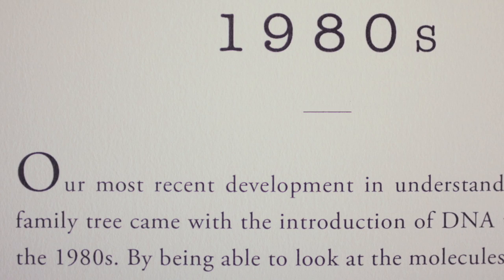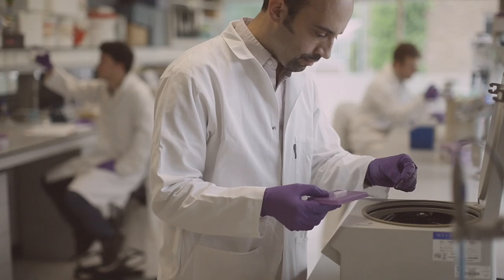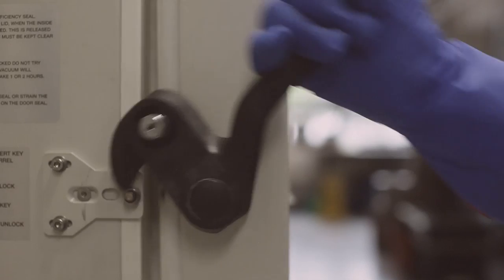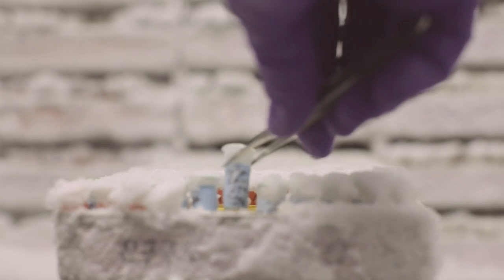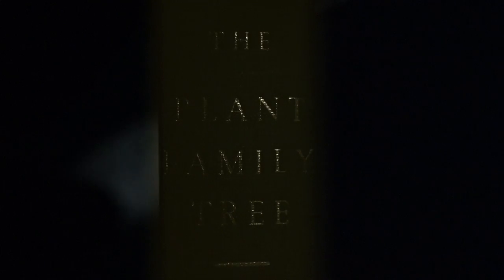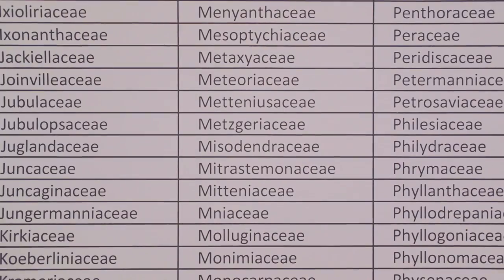Our most recent development in understanding the plant family tree came with the introduction of DNA technology in the 1980s. By being able to look at the molecules of plants, we can now understand the evolution of plants over time and trace in incredible detail the diversity back to its simplest origins. What's incredible is that 90% of the families that had been previously defined based on morphological characteristics were verified by the DNA work.